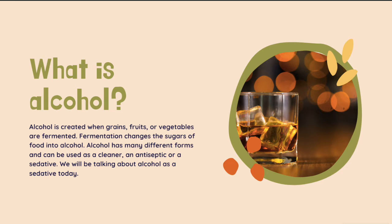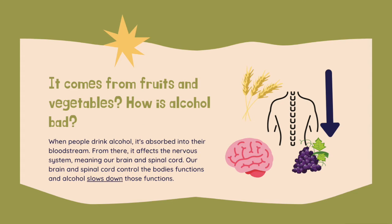What is alcohol? Alcohol is created when grains, fruits, or vegetables are fermented. Fermentation is a process that uses yeast or bacteria to change the sugars in food and turns it into alcohol. Fermentation is used to produce a lot of different things — cheese, medications or antibiotics. Alcohol's different forms can be used as a cleaner, especially right now, as an antiseptic or sedative. When we talk about alcohol today, we're talking about the alcohol that people drink — we call that a sedative or depressant.